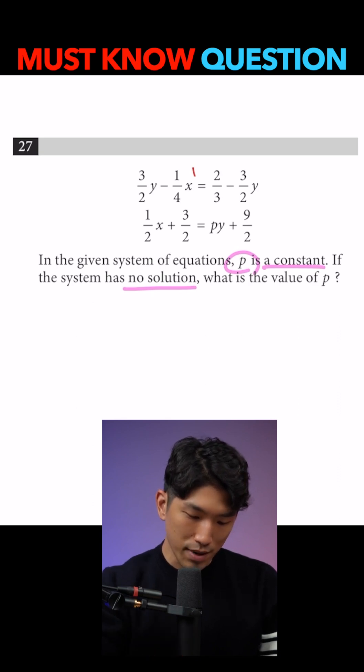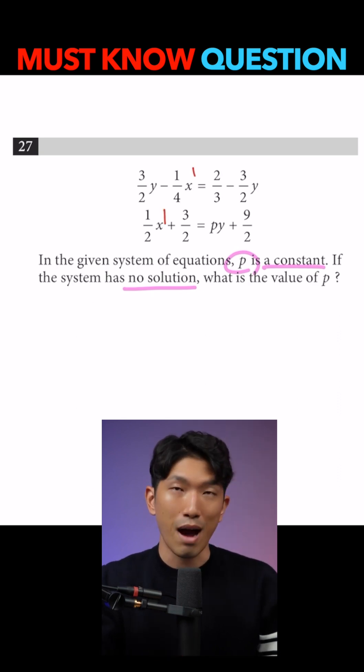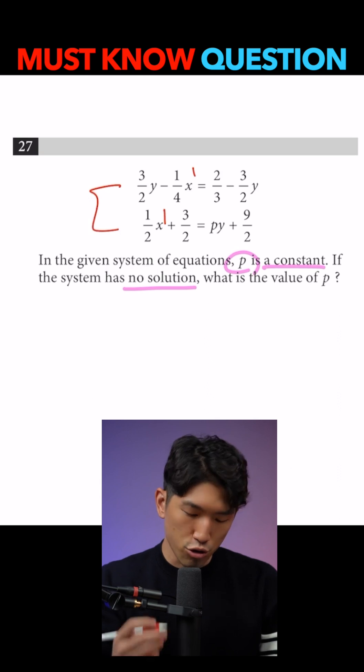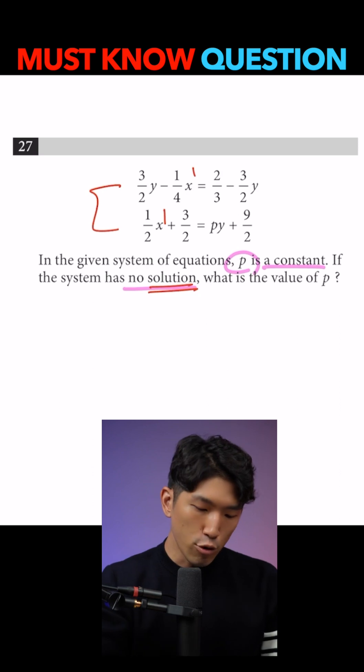So in the system, we have two lines because all the Xs are to the first power. And on the SAT, when you are given two lines and it's asking for number of solutions, it's asking for the number of intersections. And how do we find the number of intersections for two lines?